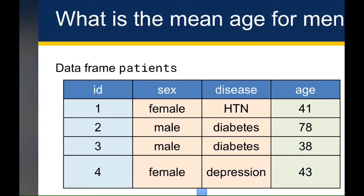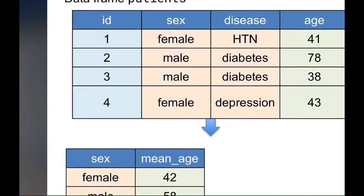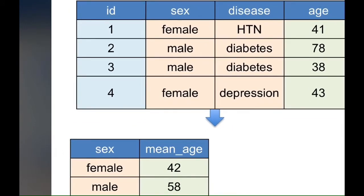Imagine I had the question: what is the mean age for men versus women in a data set? Working in this data set, what I really want to get back is the mean age for women and the mean age for men — something that looks like this. Notice the ID column is gone because I'm not talking about individuals here, I'm talking about all women and all men. The sex column is there because that's the variable I want to group on, and age has been replaced by mean age.